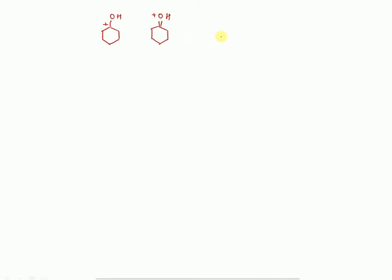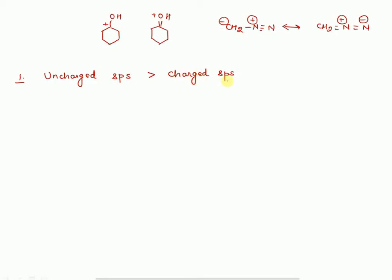The first rule is: if you have charged and uncharged species, then uncharged species are more stable. Now we will talk about the charged species — charge means some positive or negative charge. For charged species, you have to remember certain things and on the basis of a sequence of rules you decide stability. So the first thing is: number of covalent bonds — with the increase in number of covalent bonds, stability increases.